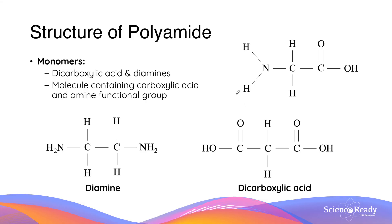Alternatively, a monomer that contains both the carboxylic acid and the amine functional group can be used. The goal is to react the two different functional groups to produce the amide linkage. By forming multiple amide linkages, a polymer — that is, a polyamide — can therefore be formed.